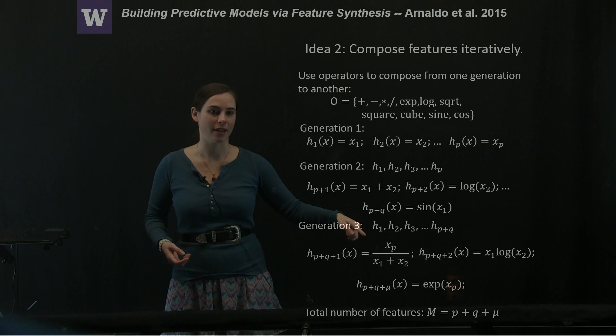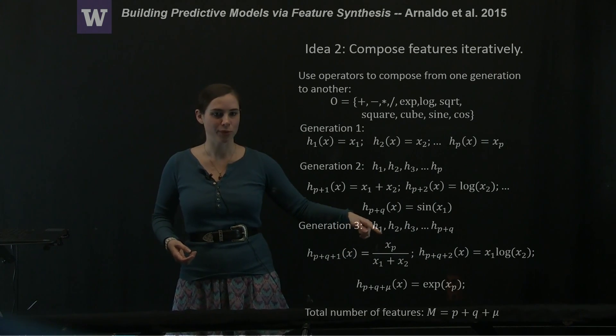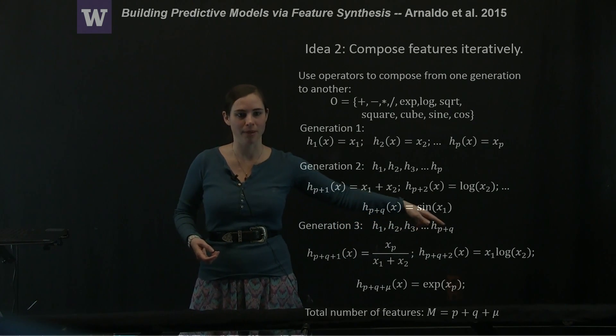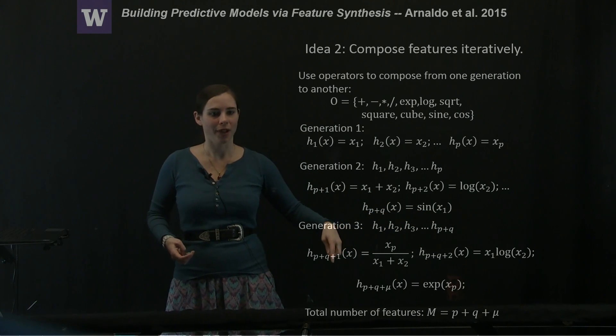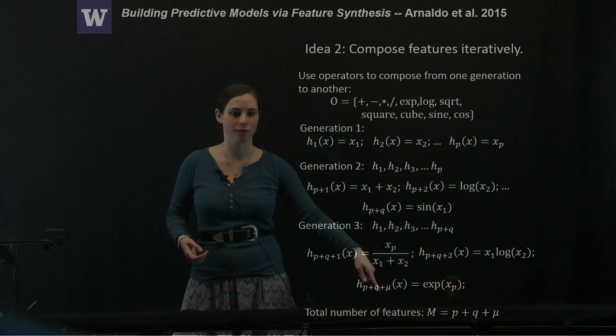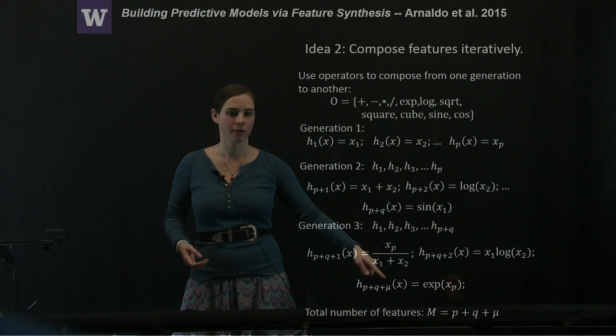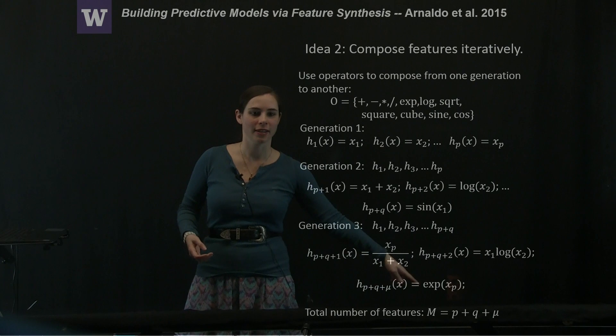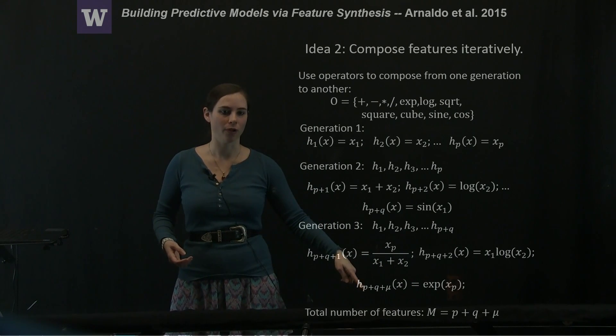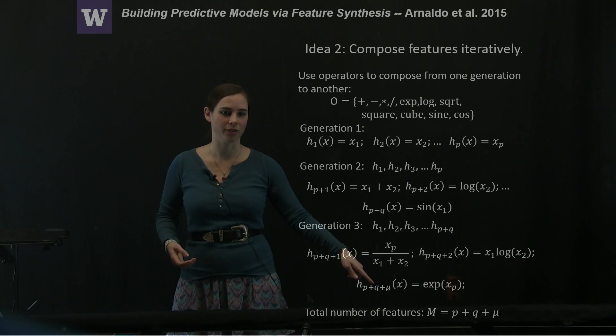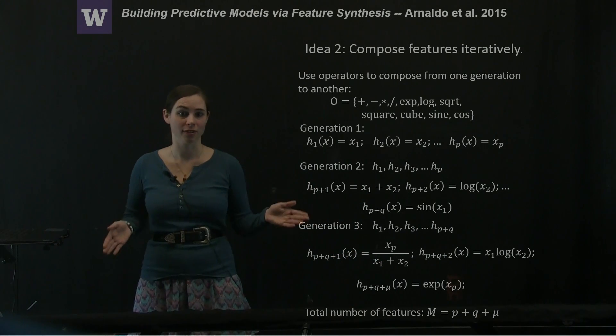So generation three is now h1, h2, h3 through hp plus q, plus all of these new features out to hp plus q plus mu. So the total number of features ends up being exactly that: all of the terms from your first generation, the ones that have survived from your previous generation, plus the new ones that you're adding to the pool.